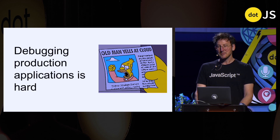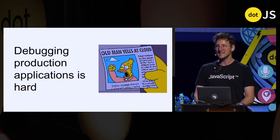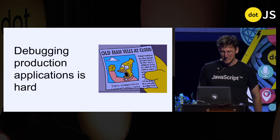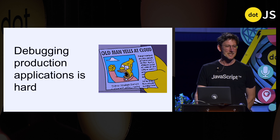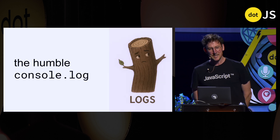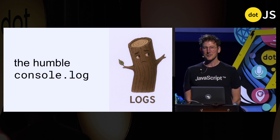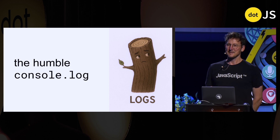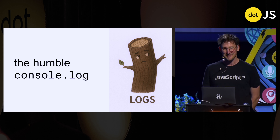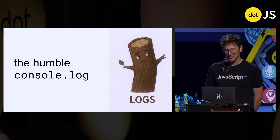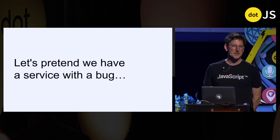Debugging production applications is hard. Who here has struggled with high traffic servers and understanding what's going on? It can be very painful. There are technological solutions these days that can make this much better, but we often come back to the humble console log to solve many problems. I've used step debuggers, I've used breakpoints in many situations, but I would be lying if I said I don't debug most problems with console logs. In production servers we can do better, and we can do better without too much trouble.